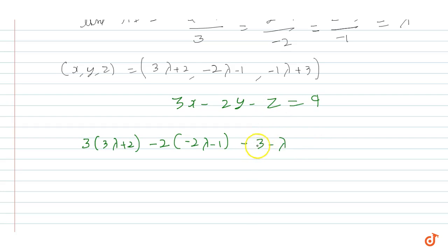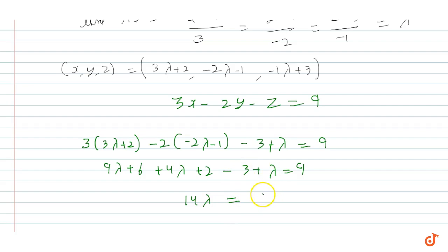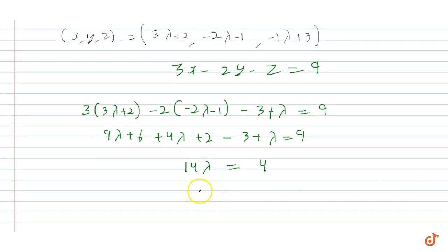Expanding: 9λ + 6 + 4λ + 2 - 3 + λ equals 9. So 14λ + 5 equals 9, giving 14λ equals 4, therefore λ equals 2/7.